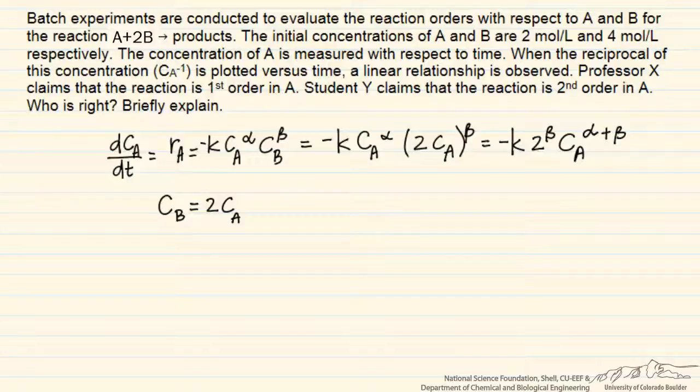We can analyze this a few different ways, but anticipating what the answer is, we're going to assume that alpha plus beta is equal to 2. This represents a way of doing the integral analysis of batch kinetic data, where we pick a reaction order and then see if we were correct in terms of the experimental data that we observe.